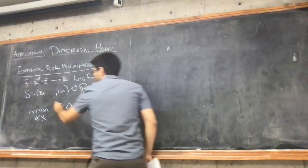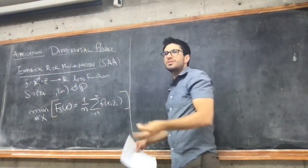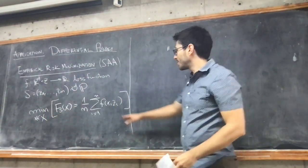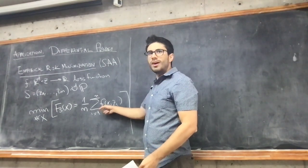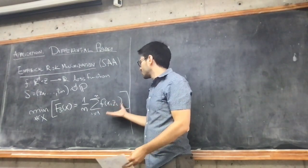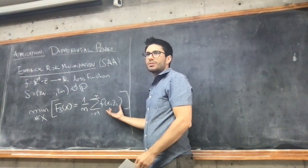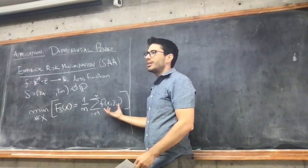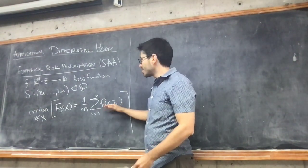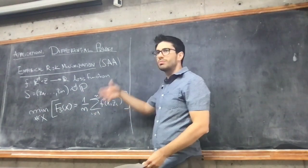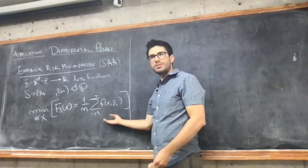I want to find a model given by d parameters that best fits the data in terms of this loss function. So I want to minimize over x in some set X — assume this is a closed convex set — the empirical risk F_S of x, which is given by (1/n) times the sum of f(x, z_i) for i equals 1 to n. You can think of f as the square loss for a linear model, SVMs with hinge loss, logistic regression — anything sort of fits within this.